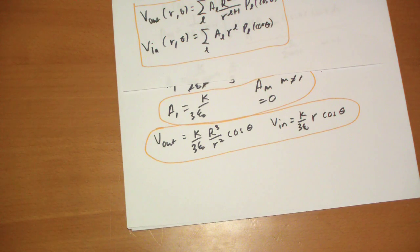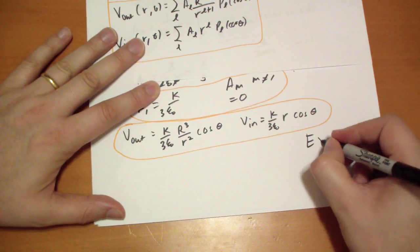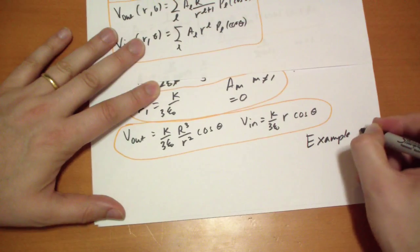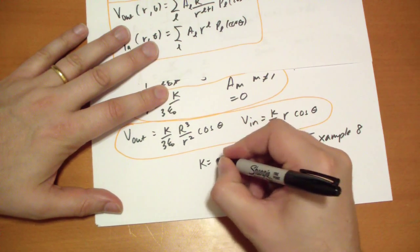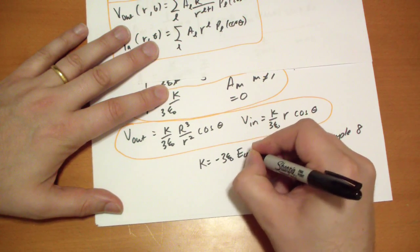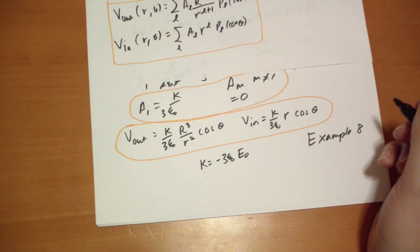And if you remember example 8, go back and review if you don't remember example 8. We had a field that was vertical throughout space, and we tried to put a conducting sphere inside of that field. And if we substitute k is equal to, if k is equal to minus 3 epsilon-naught e-naught, then we're going to get the same potentials we got out of that equation.